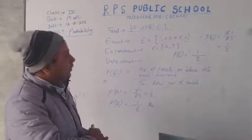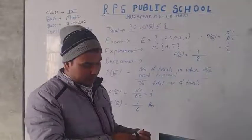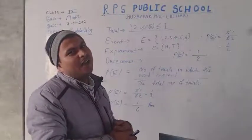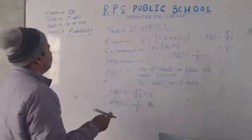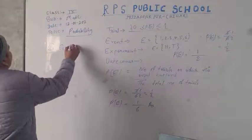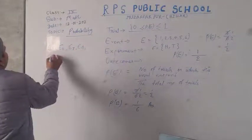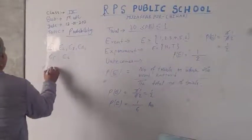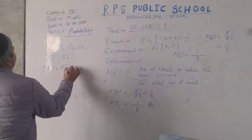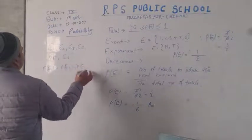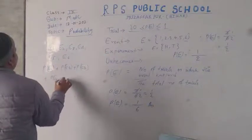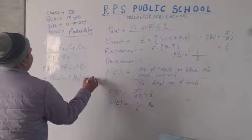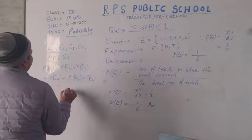For a dice, the overall experiment gives events E1, E2, E3, E4, E5, and E6. And if we add P(E1) + P(E2) + P(E3) + P(E4) + P(E5) + P(E6), the result equals 1.